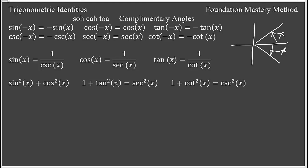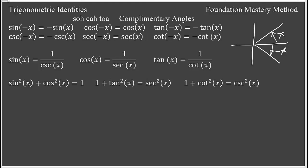Now we'll talk about identities. We have seen in the unit circle that sine squared x plus cosine squared x equals 1. If you divide both sides by cosine squared x, you get 1 plus tangent squared x equals secant squared x — since sine over cosine is tangent, and 1 over cosine is secant. Similarly, dividing by sine squared x gives cotangent squared x plus 1 equals cosecant squared x. These are the three Pythagorean identities in trig functions.